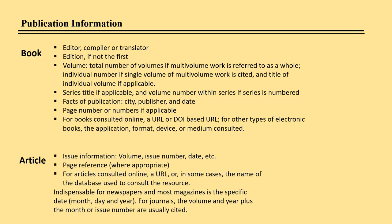Publication information for an article will always include a date of publication, usually including a month as well as a year, and possibly a day as well; the name of the journal, magazine, or newspaper publishing the article; as well as a volume, issue number, and page numbers. If the item is accessed electronically, include the URL or DOI. If the item is from a library subscription database, the name of the database is necessary. Don't forget to use the permalink URL.